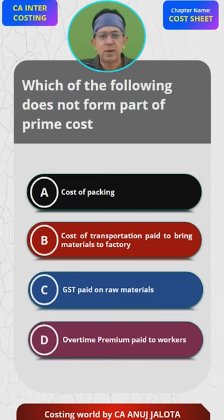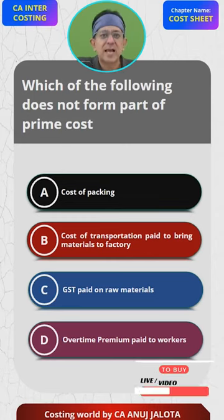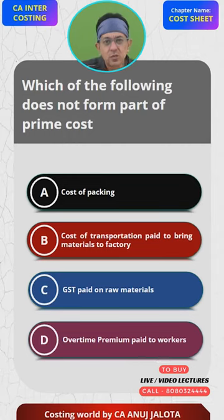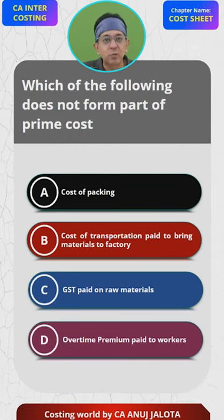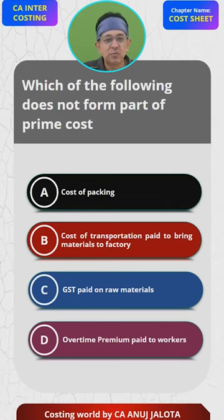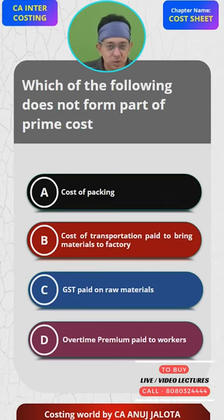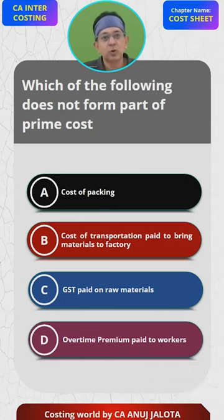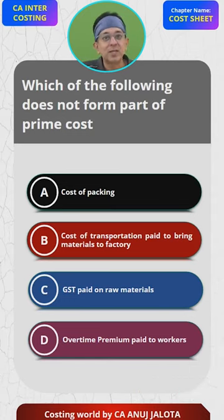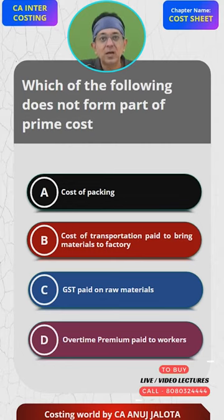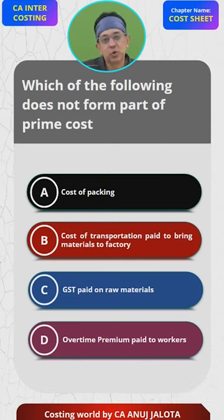Option C — GST paid on raw materials. If you purchase raw materials of rupees 100 and GST applicable is 5%, you pay your supplier 105 rupees. That 5 rupees also forms part of your raw material purchase cost. For those who know this chapter, the 5 rupees can later be claimed as credit — we call that ITC, input tax credit. But in any case, it forms part of your cost first.